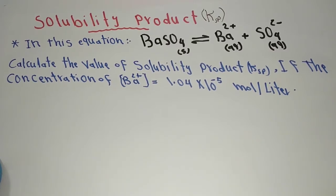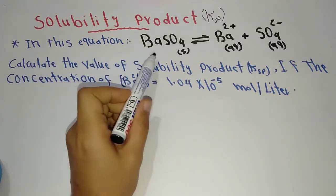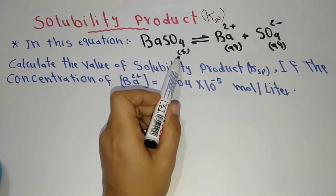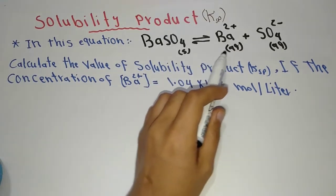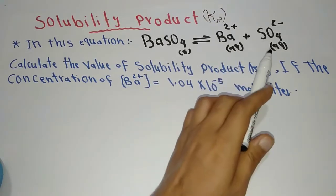In this problem, the question is in this equation: BaSO4 in a solid state is in equilibrium with its ions, barium and sulfate.